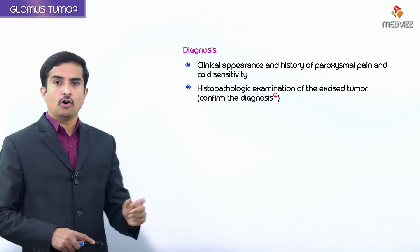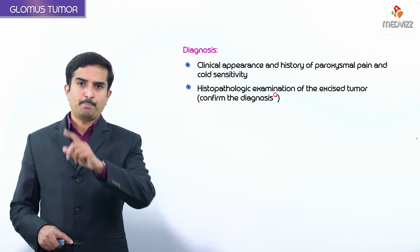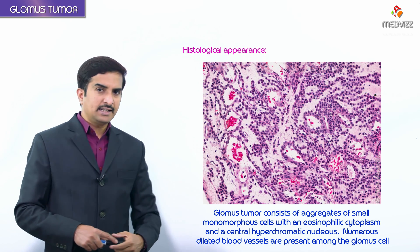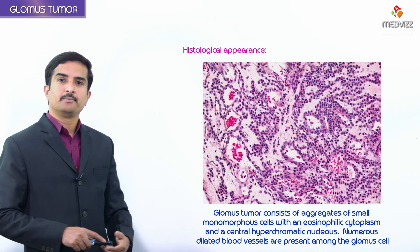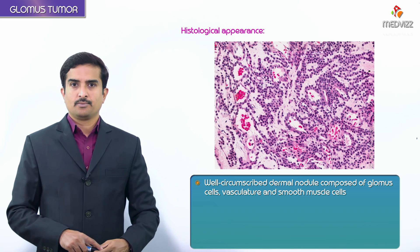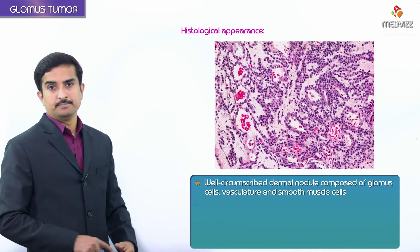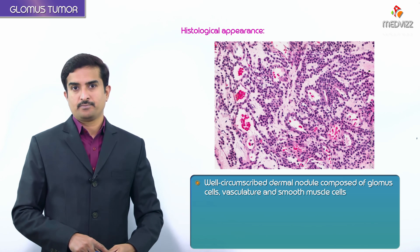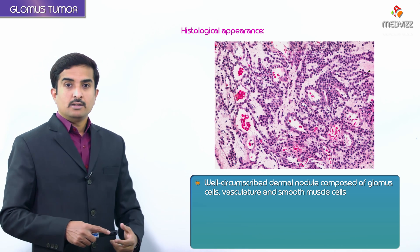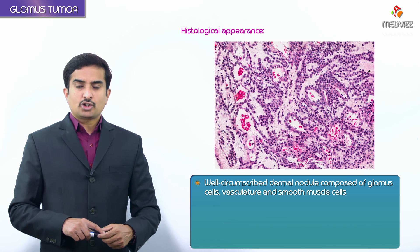Histopathological examination is required for confirmatory diagnosis. The glomus tumor appears as a well-circumscribed dermal nodule — typically presenting as a single tumor, most commonly in the sub-ungual region. It is composed of glomus cells and also contains vasculature and smooth muscle cells.